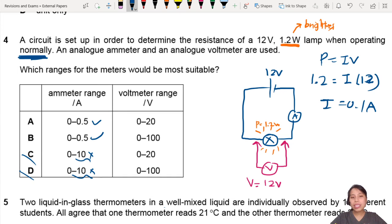Now voltmeter range: it's about 12 volts. Why would you need a hundred volts? That is really big. So you will need something between 0 to 20 to detect the 12, that's just nice. So the best answer will be A.